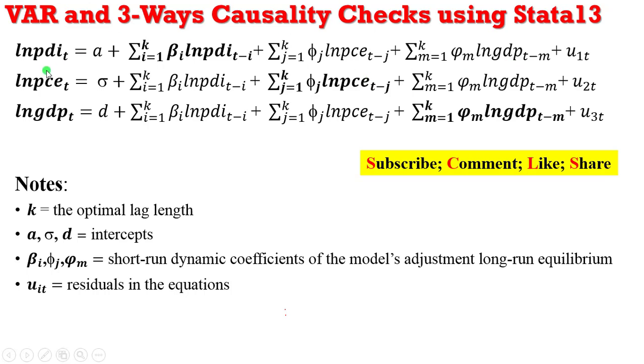So looking at the way this model is specified, you can easily see where the lag value of the dependent variable is located. Another salient feature of the VAR model is that all the variables have equal lags, k lags across all the variables in the system. Unlike what obtains in an ARDL model where the variables can take different lags, in a VAR model all the variables have the same lags.